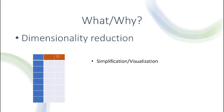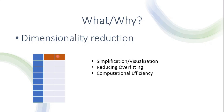There are several reasons why someone would want to perform dimensionality reduction. One possible reason would be to simplify the data, and it would also be much easier to visualize the data. Another reason would be to reduce overfitting, because if the data has too many dimensions, the machine learning application could easily overfit — there's actually a term for that called the curse of dimensionality. It's also much easier to compute things with fewer features, and it's a great way to reduce noisy features or noise in your dataset, and also a great form to compress the data.